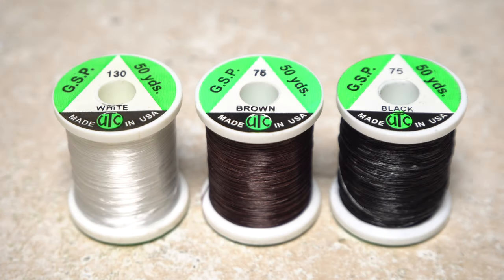GSP, or gel spun threads, are available in a variety of colors and range in size from 50 denier all the way up to 200.